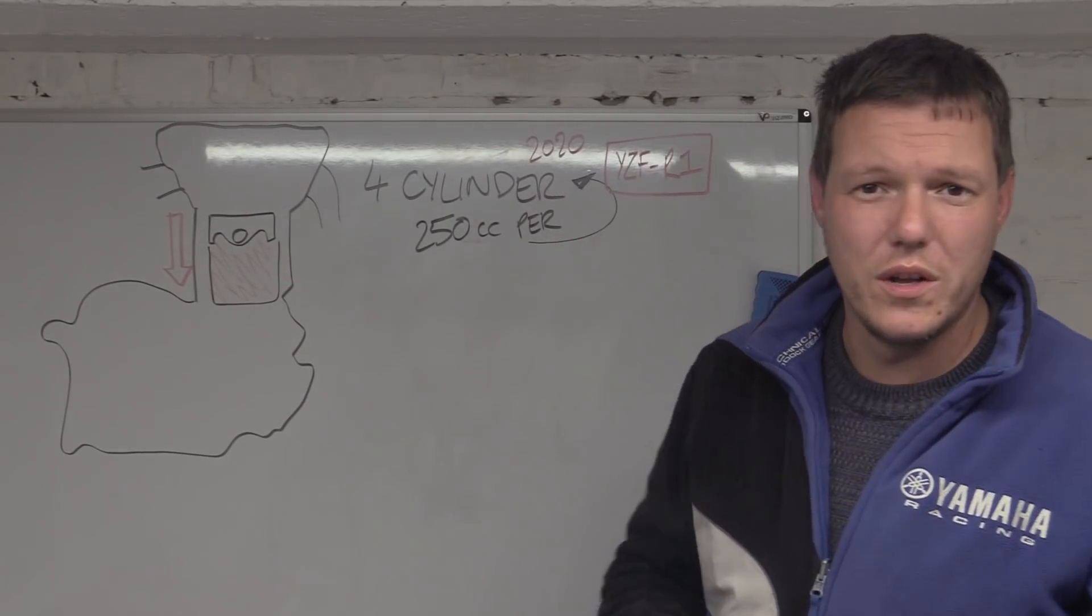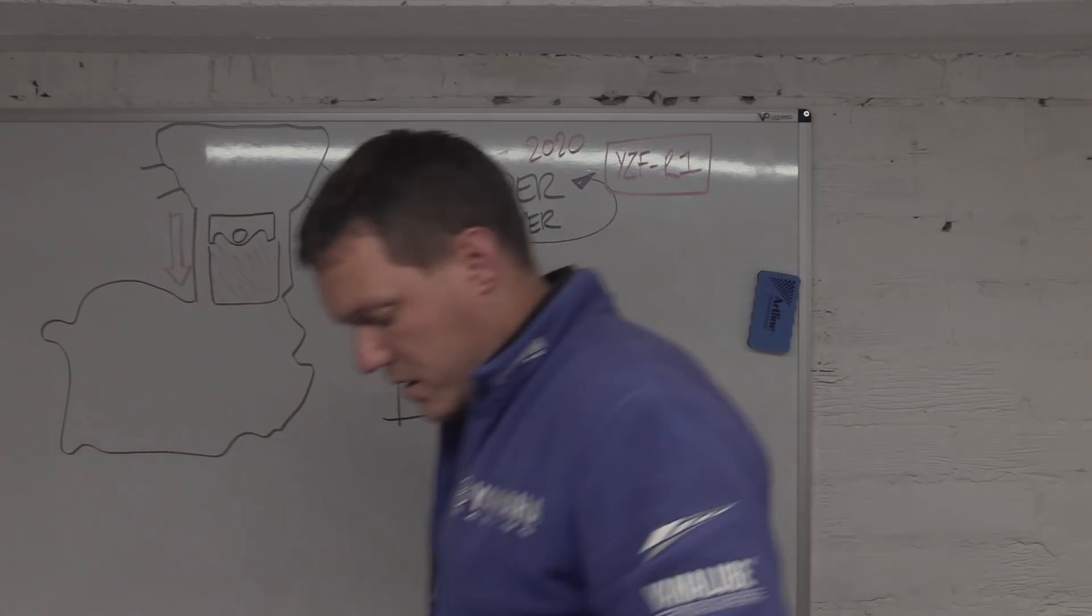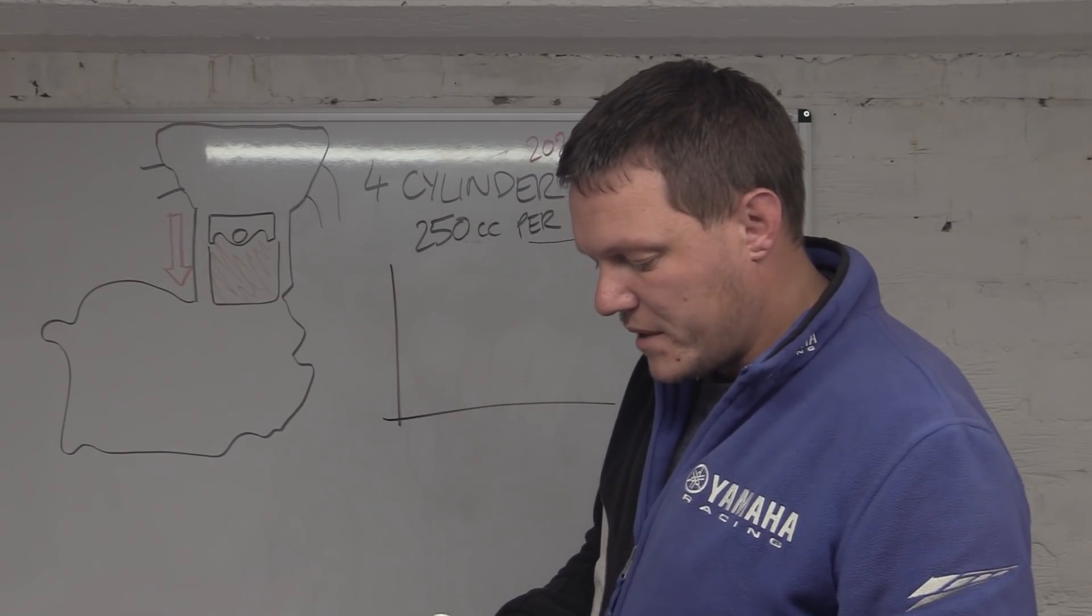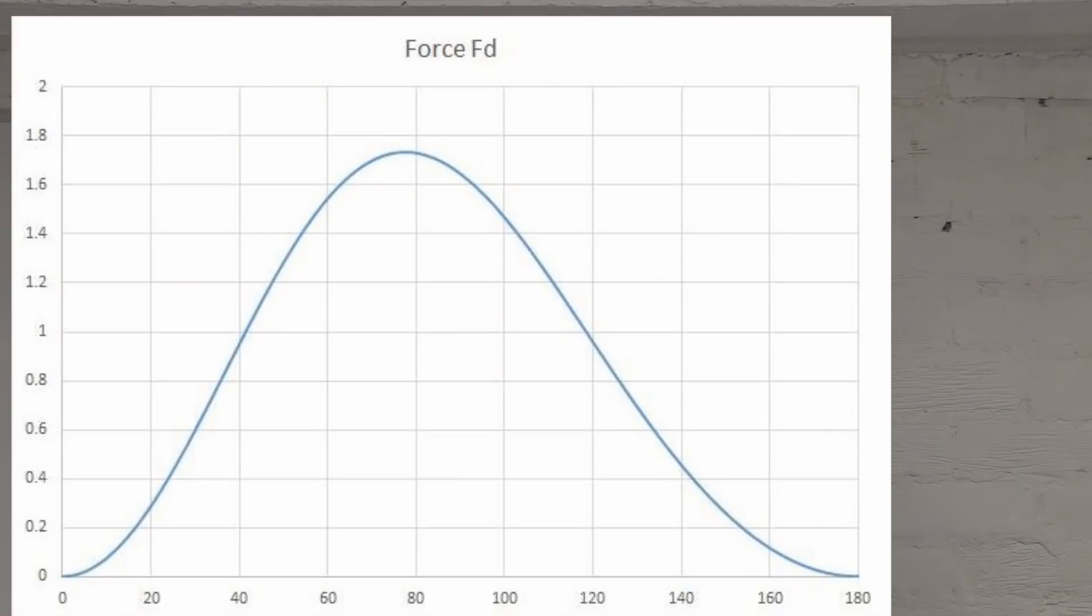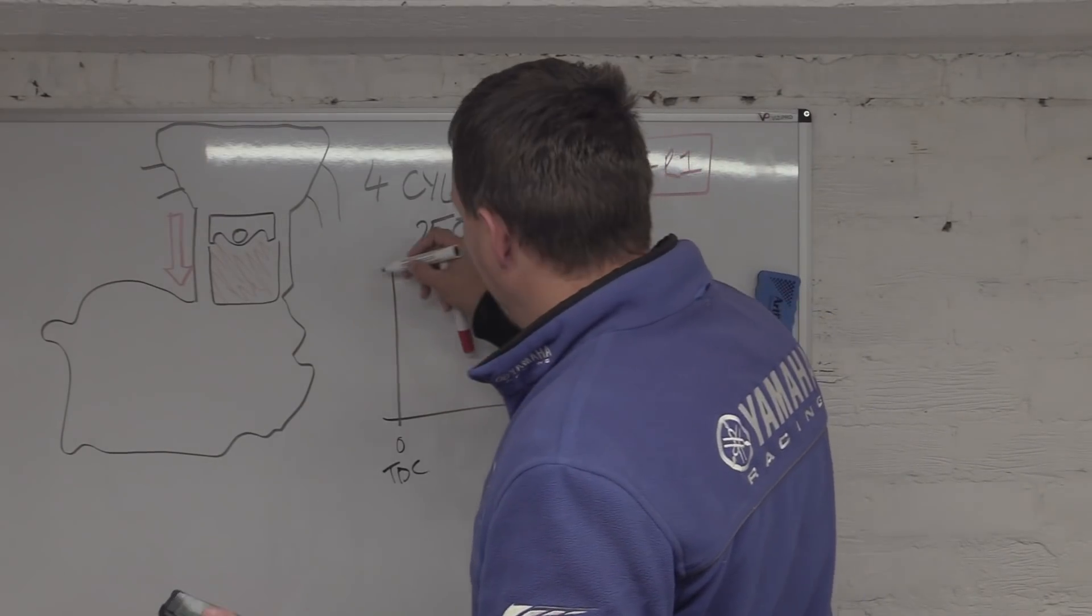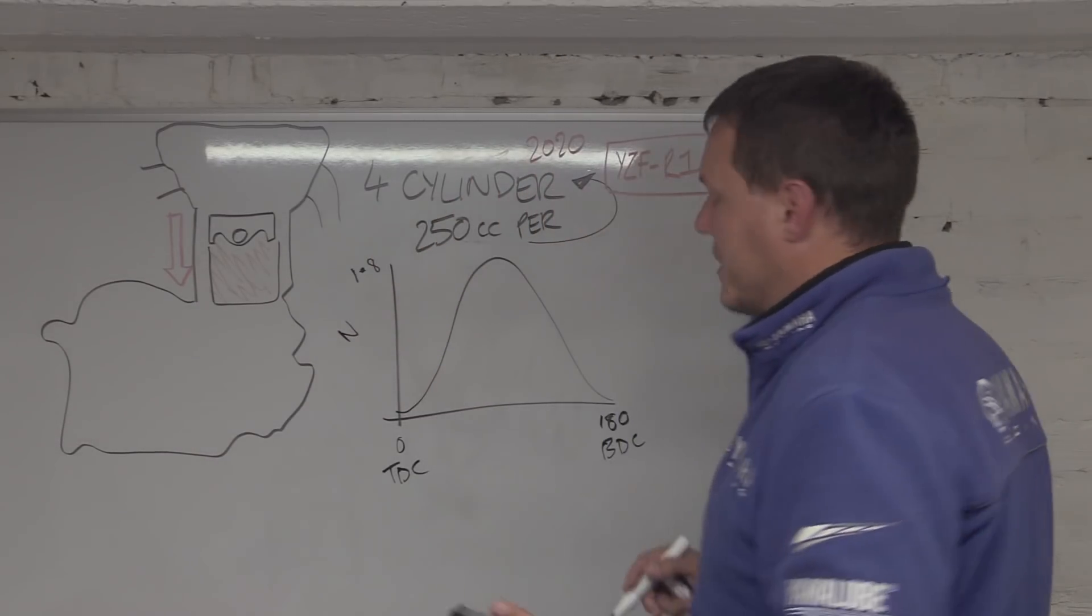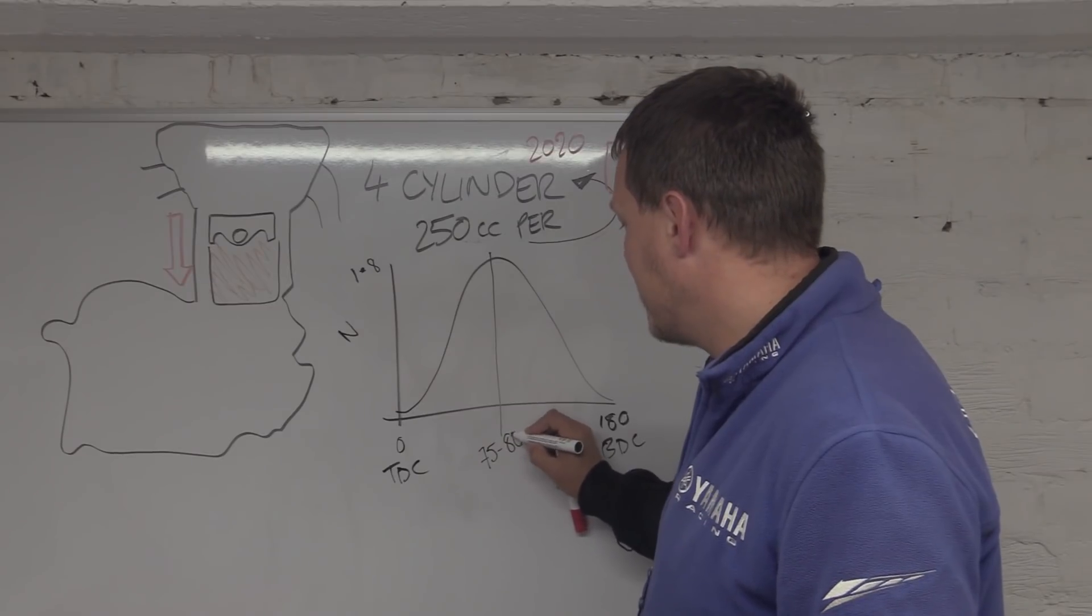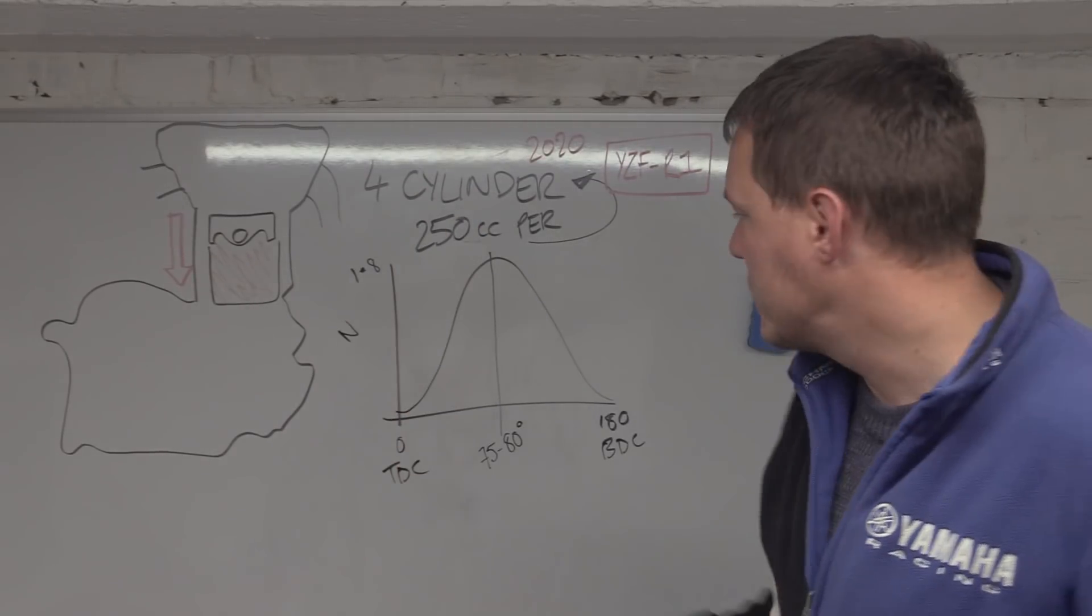When I do all that for the size of our piston, for one cylinder for the R1, when you do all this, you end up with a graph that looks like this. On the graph, what we've got across the bottom is zero to 180 degrees, so basically top dead center to bottom dead center. Then we've got it goes up to 1.8 and this is newtons of force.